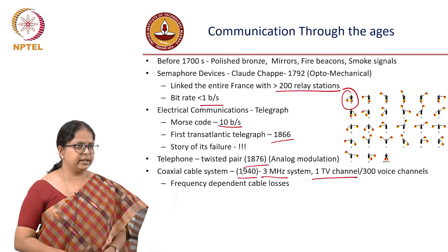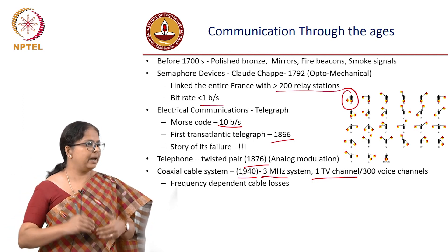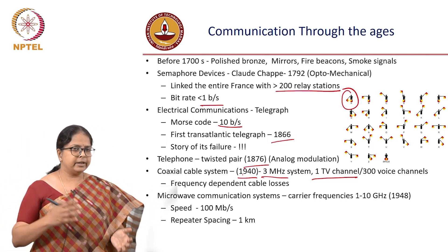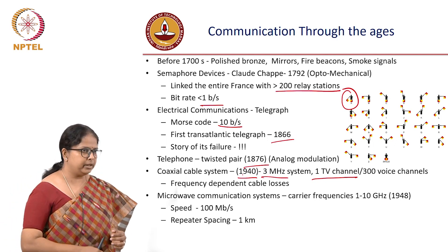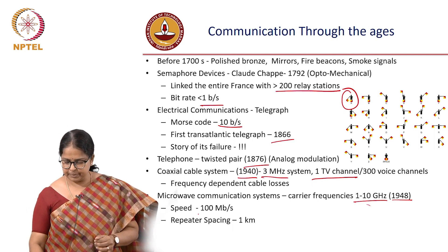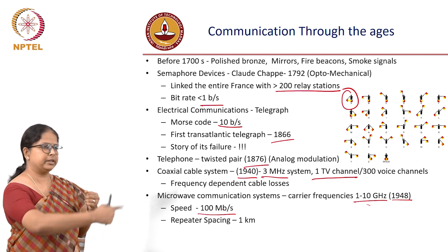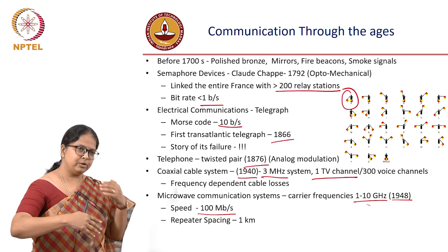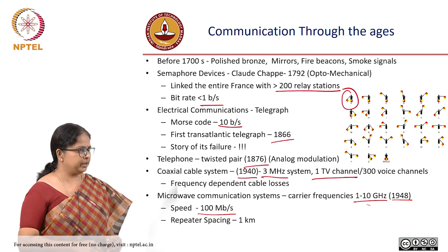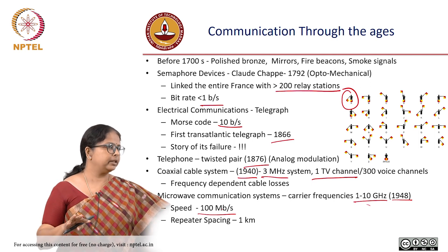The problem with coaxial cable was frequency-dependent loss. The cable acts like a transmission line with its own inductance and capacitance, so bandwidth scaling was not possible. To increase bandwidth, people moved to microwave communication systems, which also allowed free-space communication links. Carrier frequencies of 1 to 10 gigahertz were used as early as 1948, with speeds of 100 Mbps. Repeaters were used for longer distances. By the 1950s, electrical and electromagnetic communication was well established.